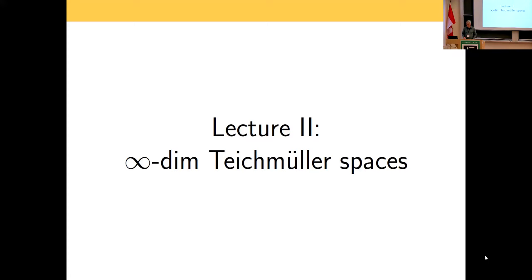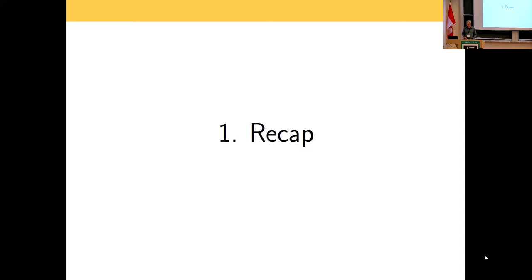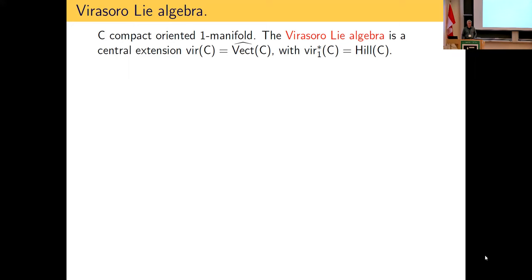I will now get to the infinite-dimensional Teichmüller spaces, which are in the title of these lectures. A very brief recap: one thing we did yesterday was talk about the Virasoro algebra. The Virasoro algebra is a central extension of the vector fields whose dual at level one is the space of Hill operators. The level sets are invariant under the action of diffeomorphisms, and that basically defines what the central extension is.